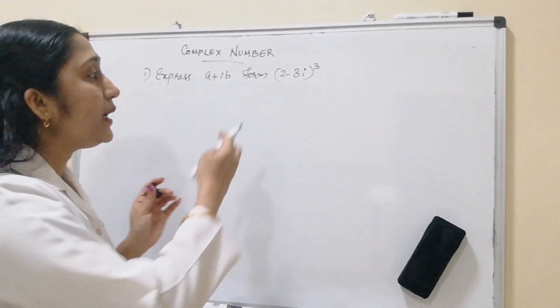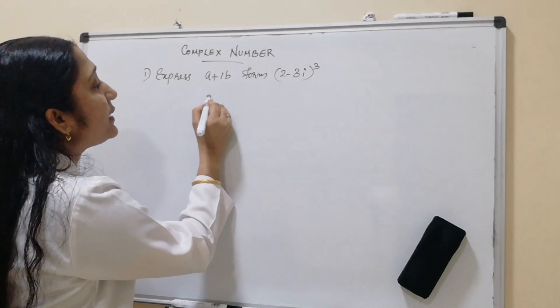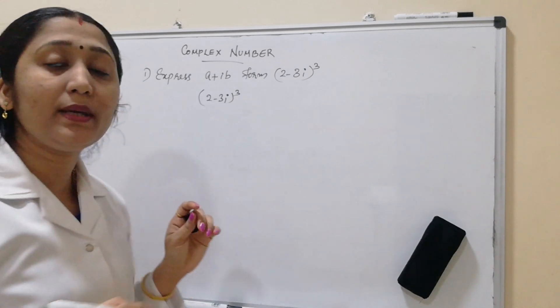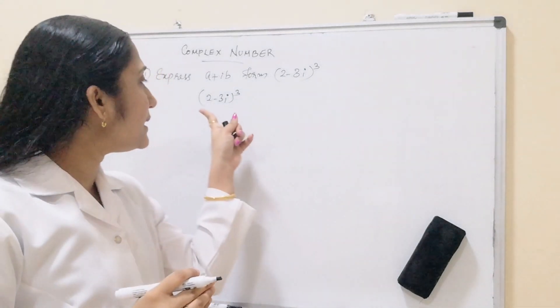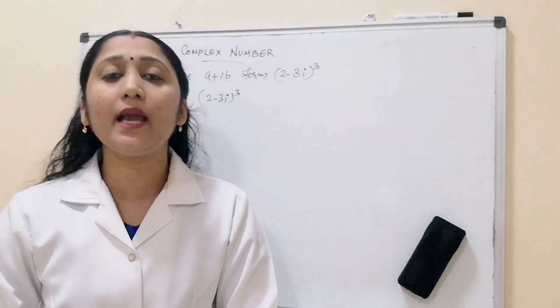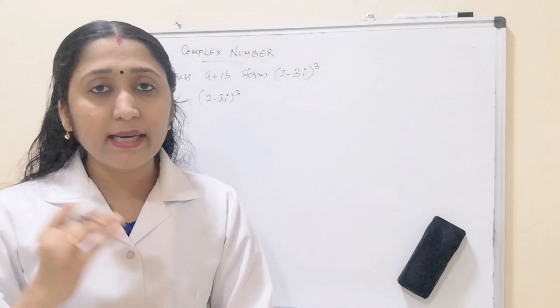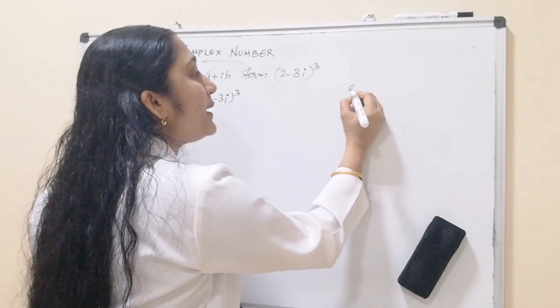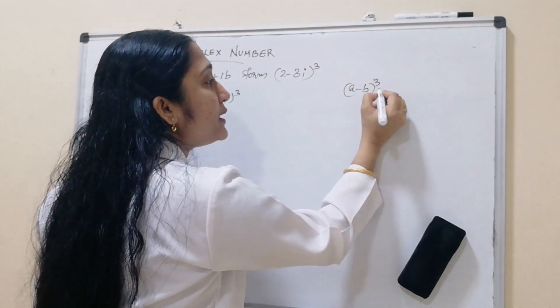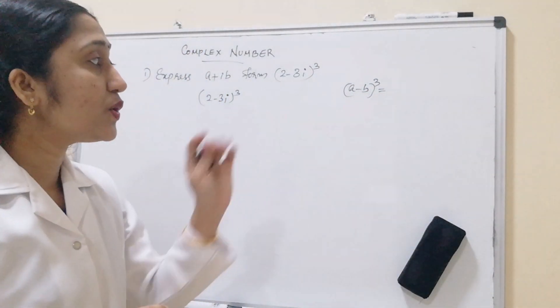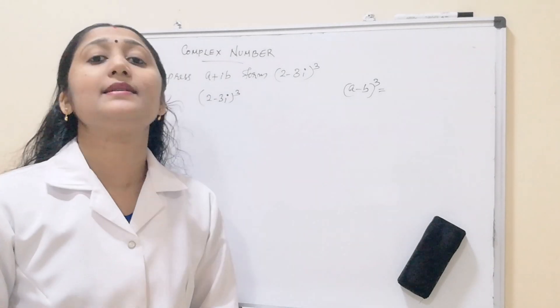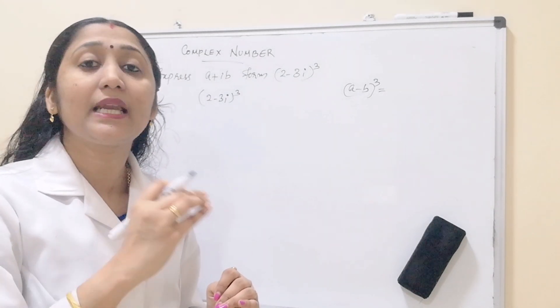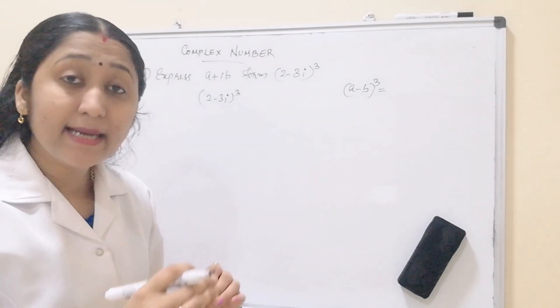Let us see how to do. Here, 2 minus 3i whole cube is the problem. 2 minus 3i whole cube means you studied a minus b whole cube. What is a minus b whole cube? You have already studied this in the 9th standard. Yes, a cube minus 3a square b plus 3ab square minus b cube.